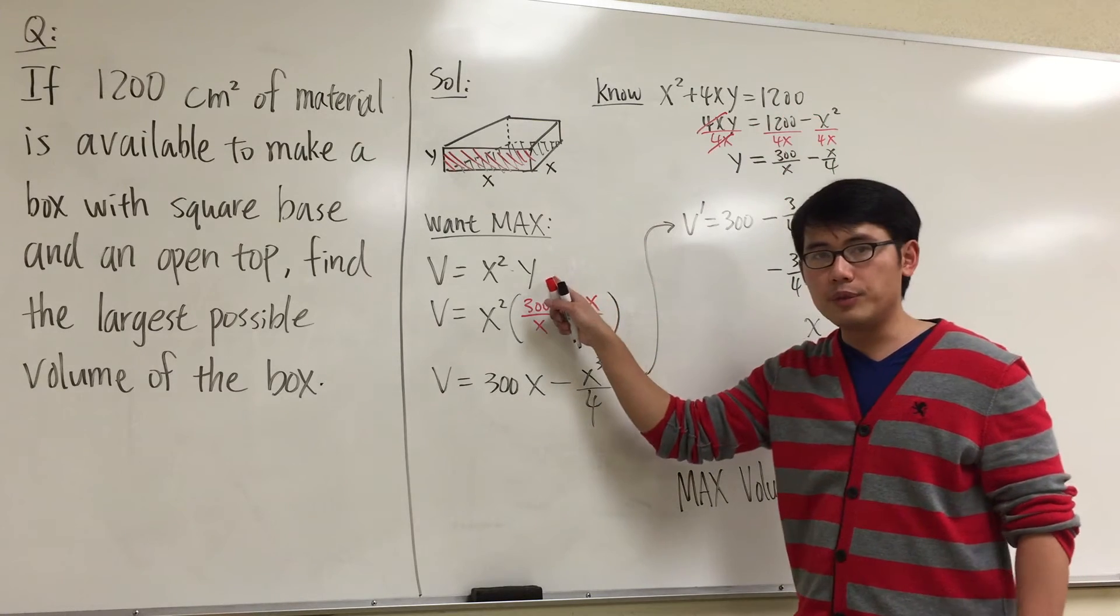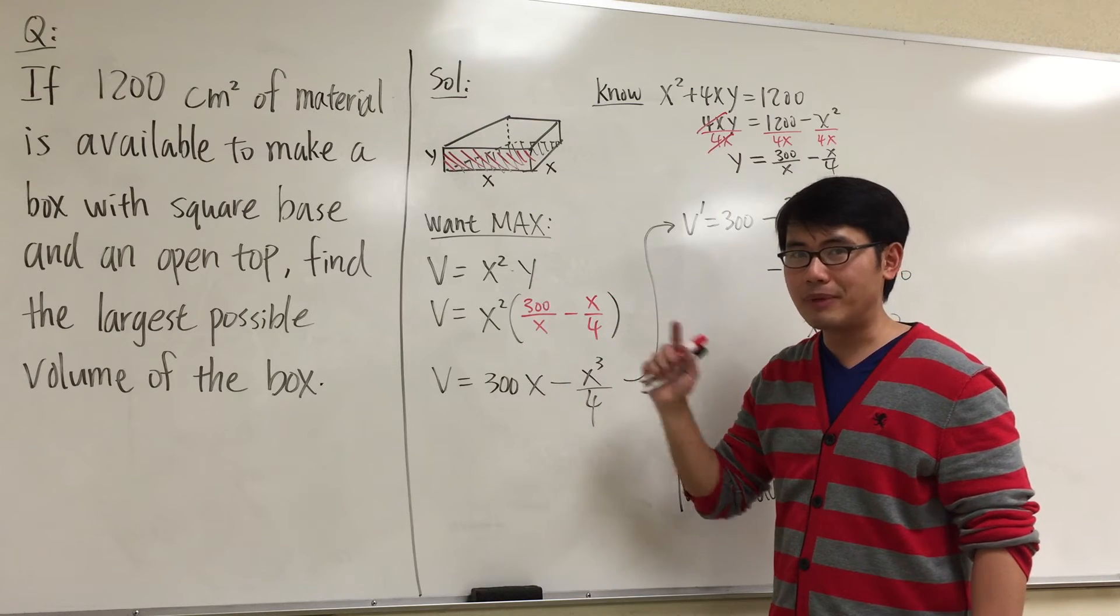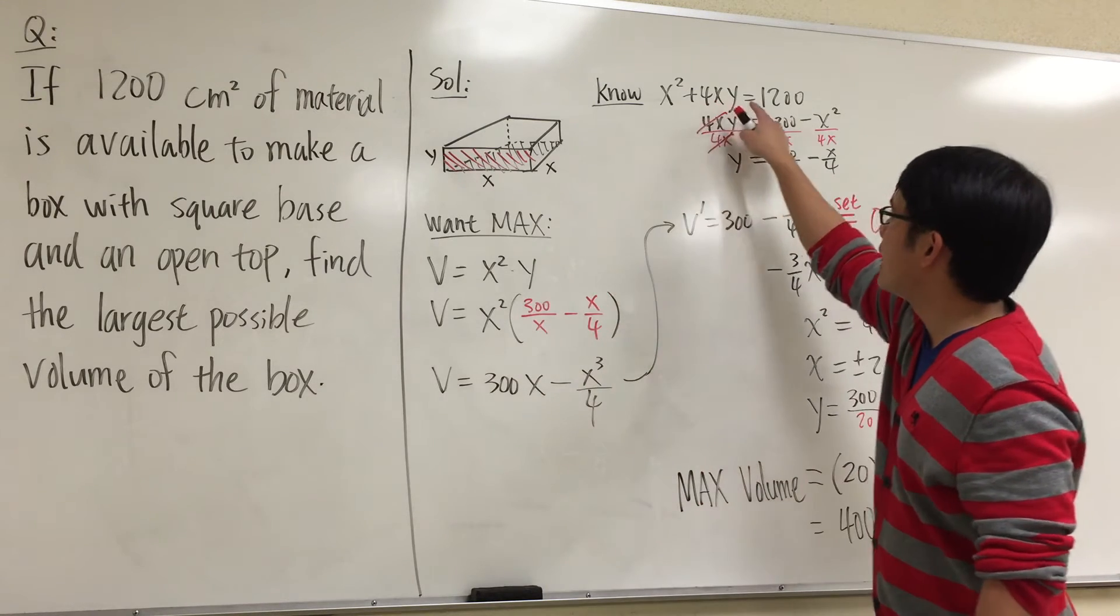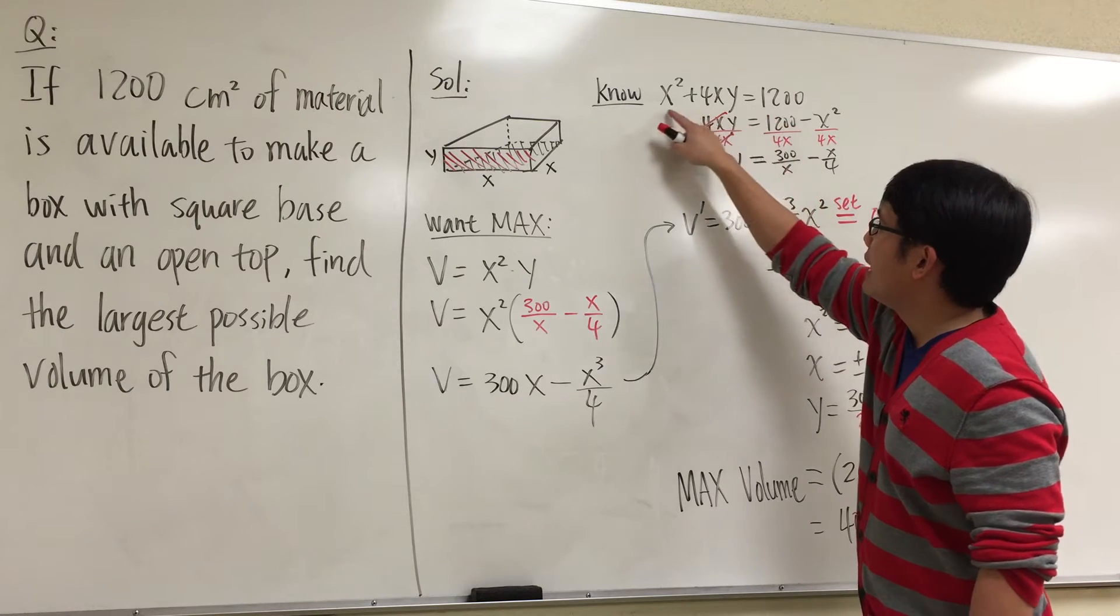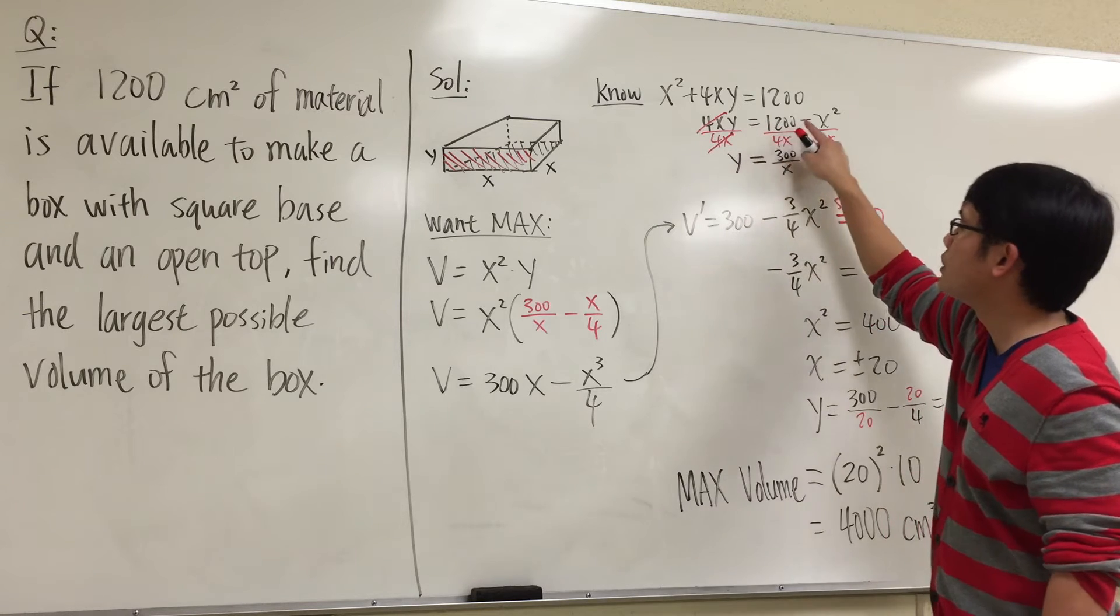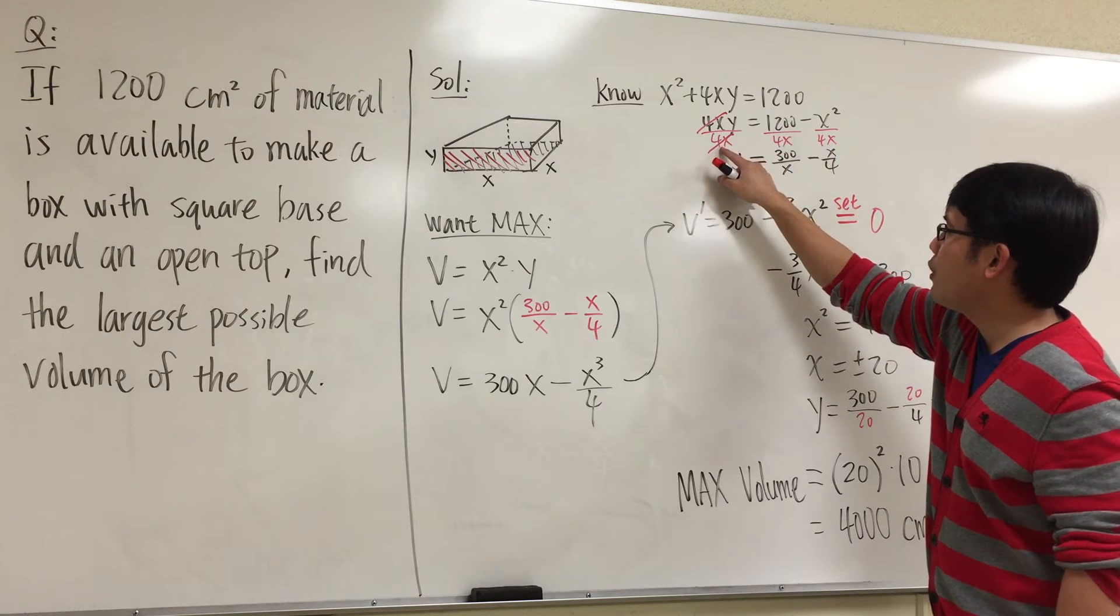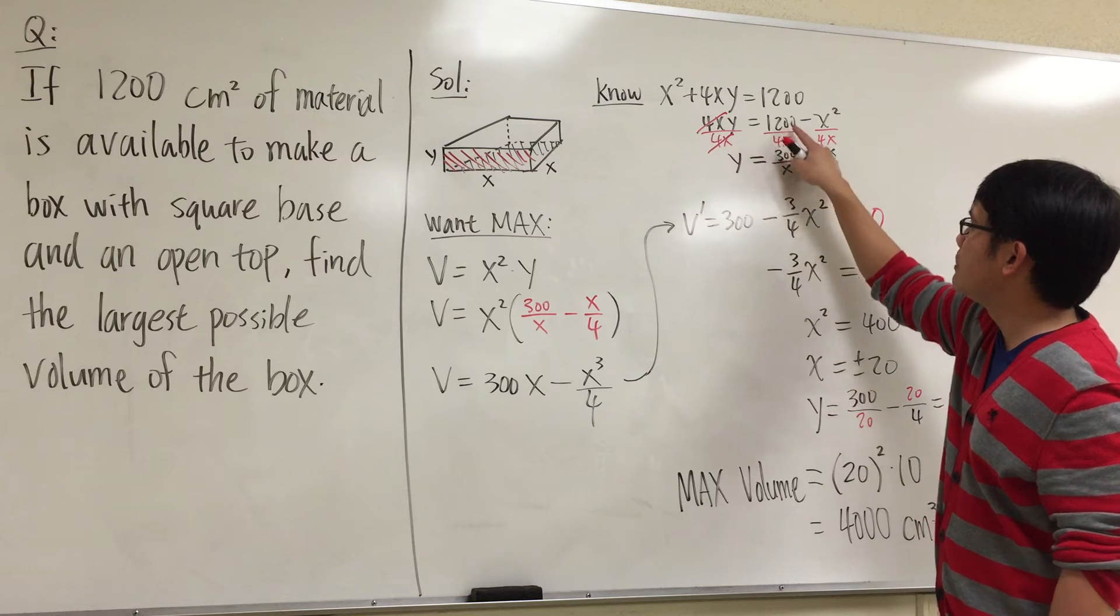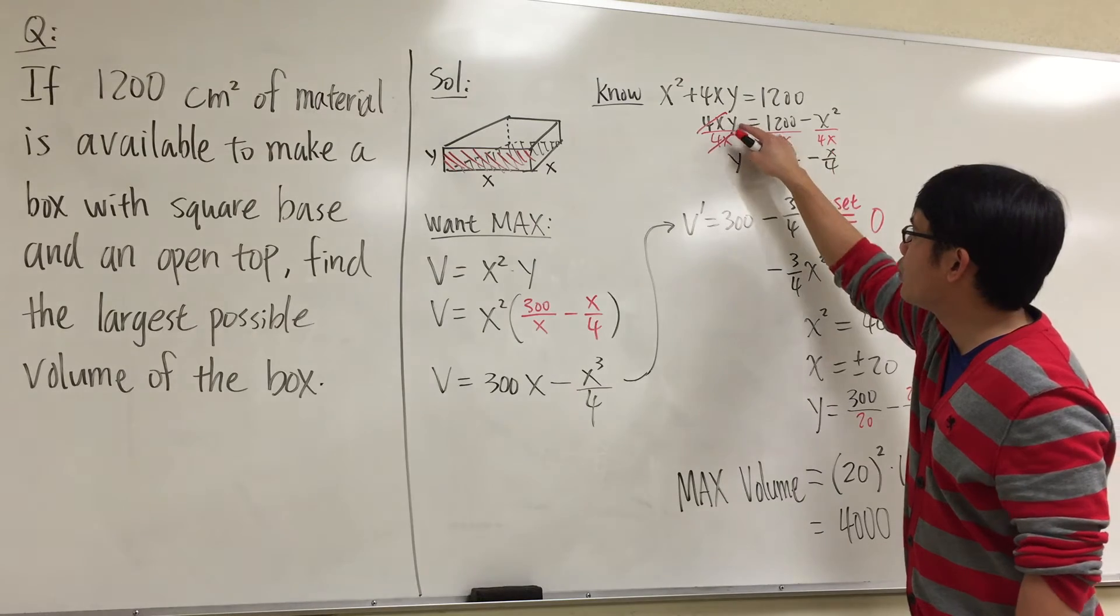But as you can see from the following equation, we have x² times y. This is no good, but we can do this. By looking at this equation, I can subtract x² on both sides. So I have 4xy = 1200 - x². And then divide everything by 4x. So I divide by 4x here, divide by 4x here, divide by 4x right here. This way I can get the y by itself.